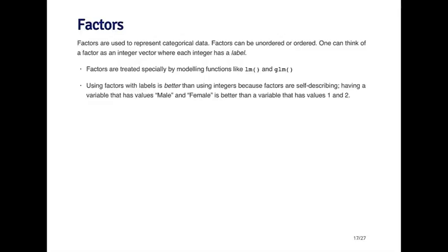A factor is a special type of vector used to represent categorical data. There are two types of factors: unordered and ordered. You can think of unordered factors as storing data that have labels which are categorical but have no ordering.